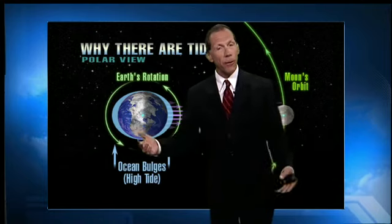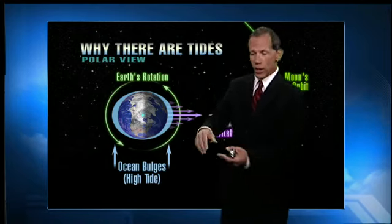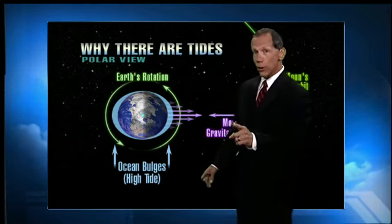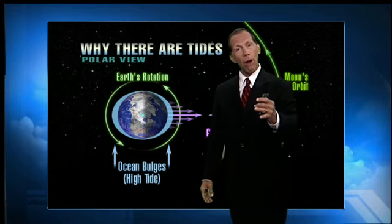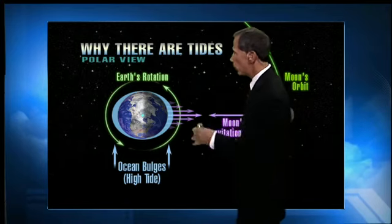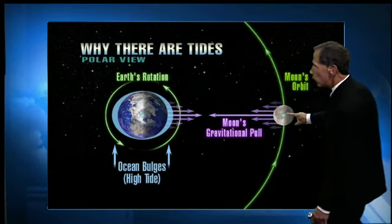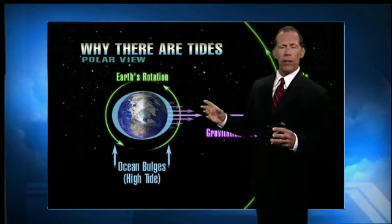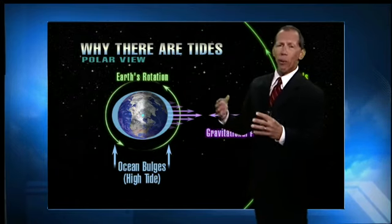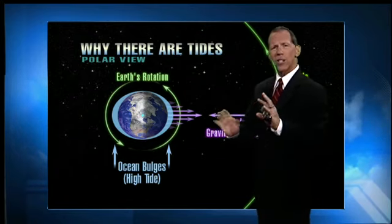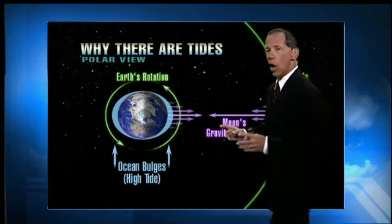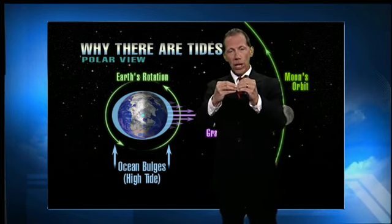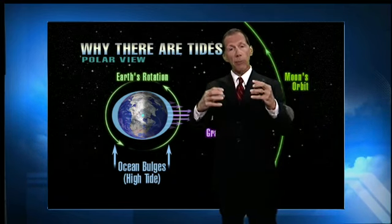So why are there tides? If any of you have been to the beach, you see there's times where the water's higher and times where the water's lower. It all has to do with gravitational pull between the Earth and the Moon, and also the Earth and the Sun, and the three as they work together. There are a lot of moving parts, all kinds of different angles. But basically, all objects have a gravitational force between them — the larger the objects, the more noticeable it is.